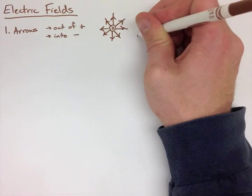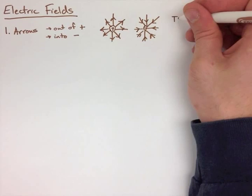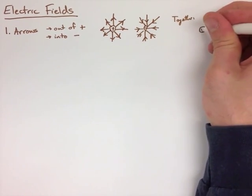Now, if we were to look at this together, so when we draw it separately, it just looks out and in. When we draw it together, it's going to look something like this.